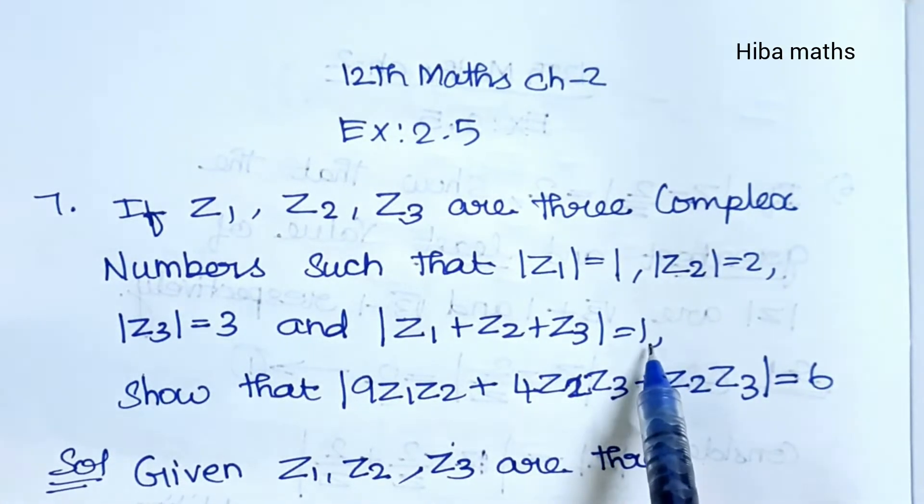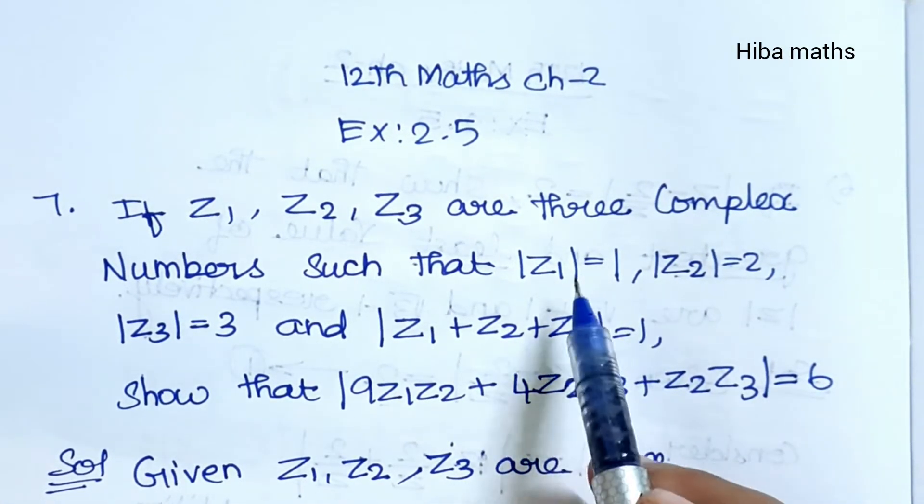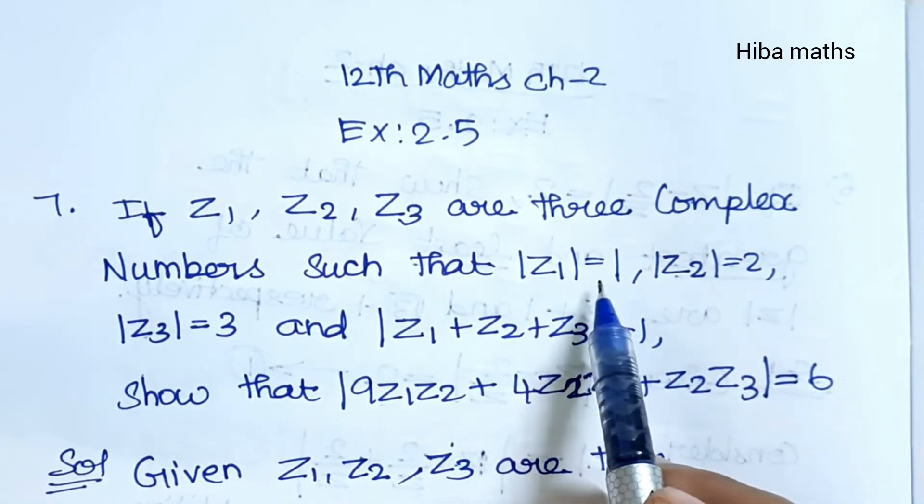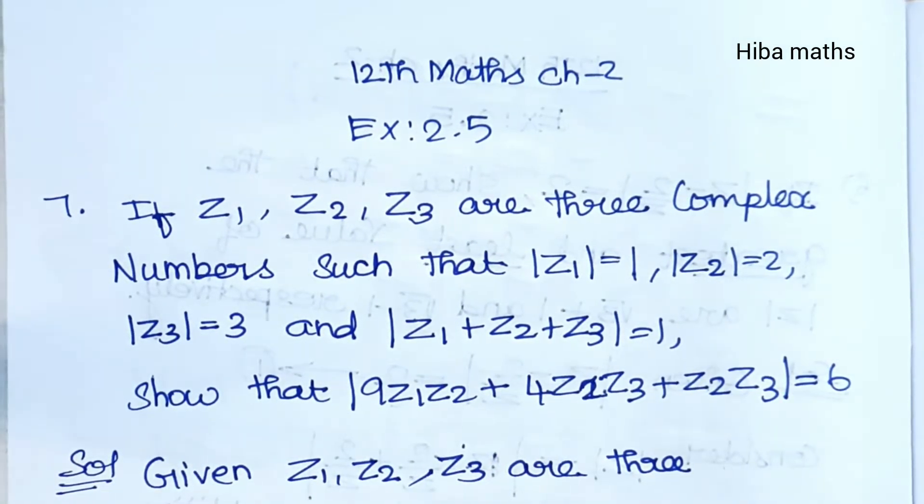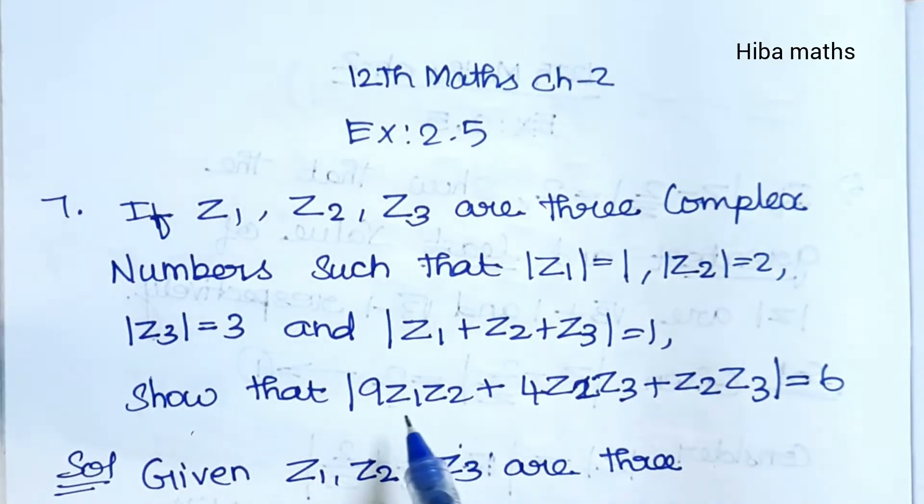And modulus of Z1 plus Z2 plus Z3 is equal to 1. This is all given: modulus of Z1 value 1, Z2 is equal to 2, Z3 is equal to 3, and all together add and the answer is equal to 1.